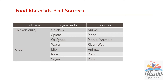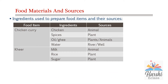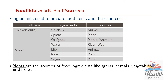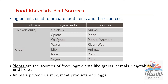Food materials and sources — it's easy for us to guess the sources of some ingredients. For example, fruits and vegetables come from plants, and milk and milk products come from animals. Plants are the sources of food ingredients like grains, cereals, vegetables, and fruits. Animals provide us milk, meat products, and eggs.